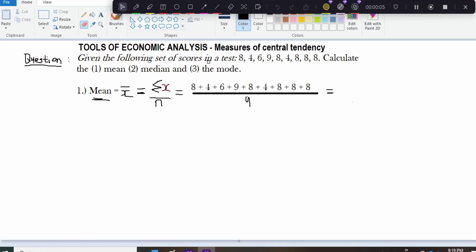Given the following set of scores in a test: 8, 4, 6, 9, 8, 4, 8, 8, 8. Calculate the (1) mean, (2) median, and (3) the mode.